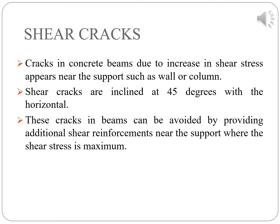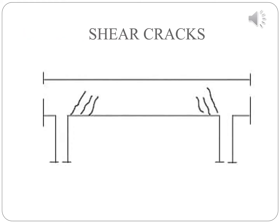The first type is shear cracks. Shear cracks in concrete beams occur due to increase in shear stress and appear near the support, such as a wall or column. These cracks are inclined at 45 degrees with the horizontal. They can be avoided by providing additional shear reinforcement near the support where shear stress is maximum — at a distance of d/2 from the support, where d is the effective depth of the beam. In this picture, shear cracks are visible in the beam.